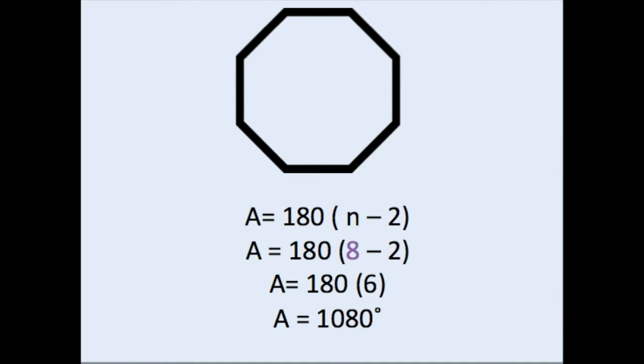So hopefully going through your work to solve the angle sum for an octagon, you started out with your formula, A equals 180 times n minus 2. You substituted in the 8 for the n because an octagon does have 8 sides. Then you computed 8 minus 2, which is equal to 6, and 180 times 6 is equal to 1080 degrees.